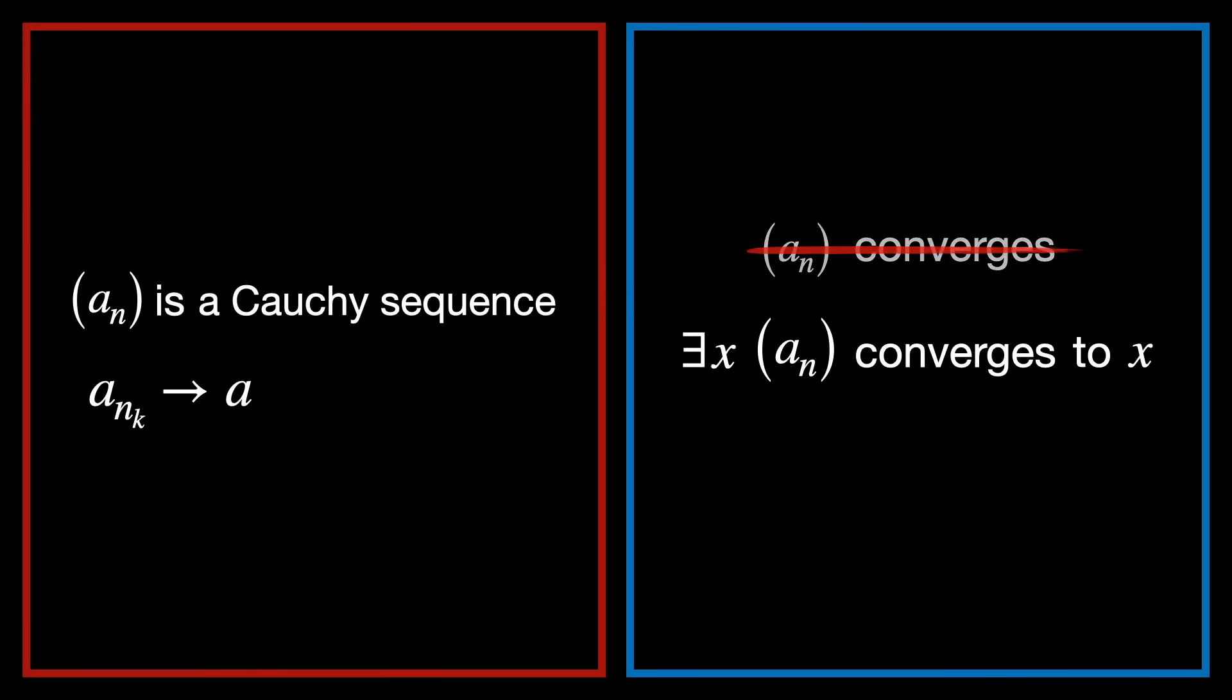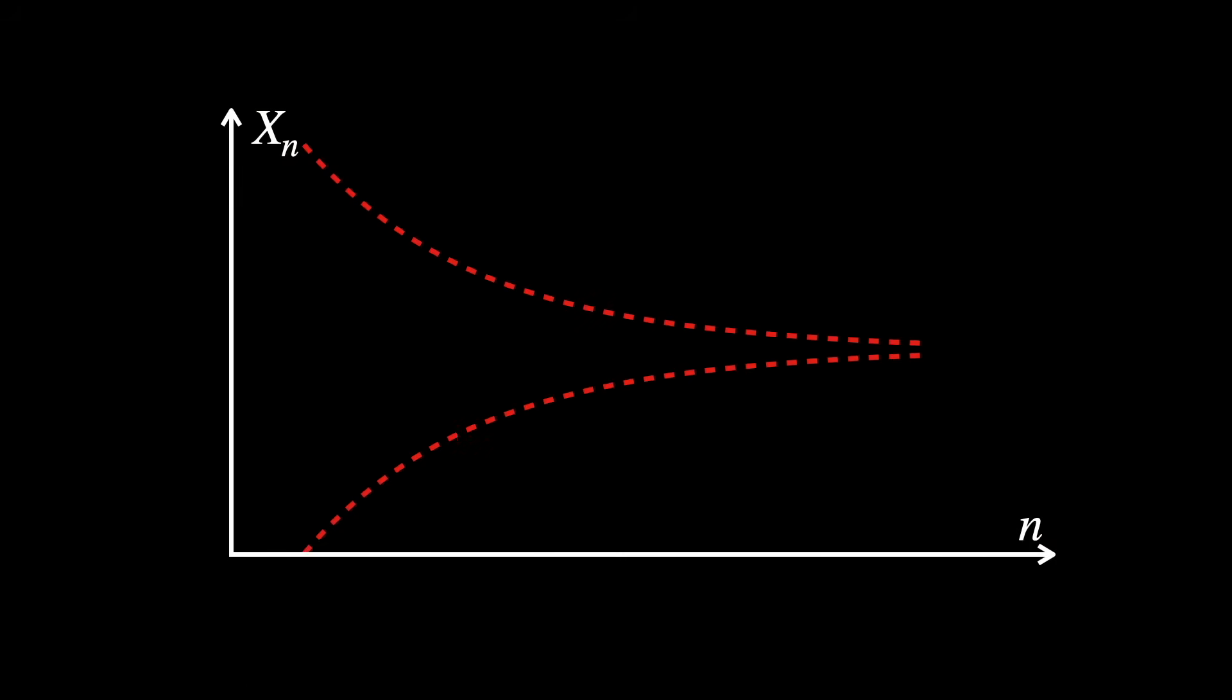Our goal just changed to an existential statement. So how will we find the x that the sequence converges to? Proving the existence of something in math can sometimes be extremely hard. That is, unless you have a very good guess for what it should be. And in this case, we do. We already have a subsequence a sub n sub k that converges, and it converges to some number a.